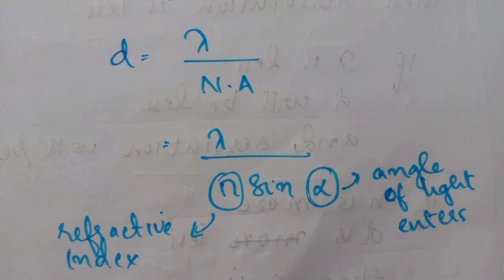For getting a lesser value in this equation, you can see that if the wavelength is more, then d will be more, which results in lesser resolution.